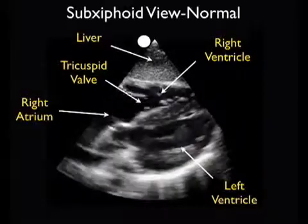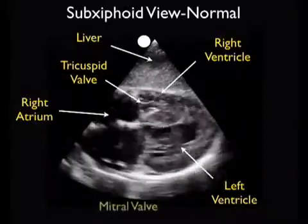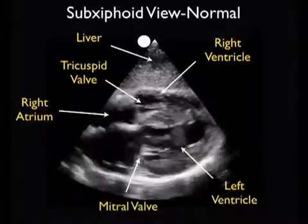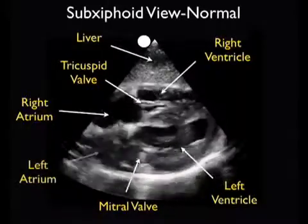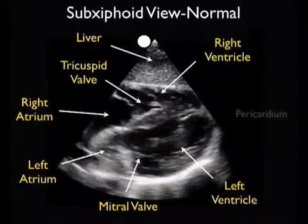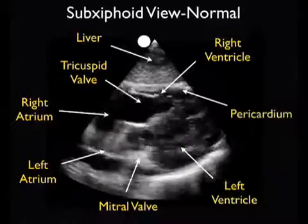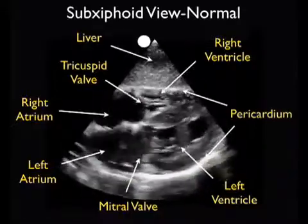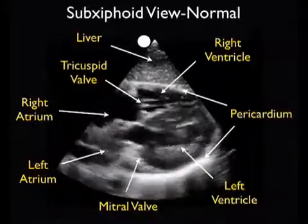Notice the tricuspid valve flipping up and down in between the right atrium and the right ventricle. Looking posterior to the right ventricle, we appreciate the left ventricle — notice again its more muscular and hypertrophic walls. Just to the left of the left ventricle, we appreciate the left atrium, and we also get a glimpse of the mitral valve flipping up and down. Note the white line of the pericardium both anteriorly above the right ventricle and posteriorly below the left ventricle, with an absence of any significant pericardial effusions.